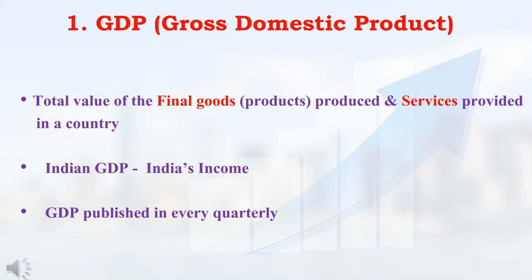How GDP is calculated: in India, how much total final product is produced — that product's total value — plus in India, how much services are provided — that service's total value. Using these values only, GDP is calculated. In simple terms, Indian GDP is nothing but the income of India.